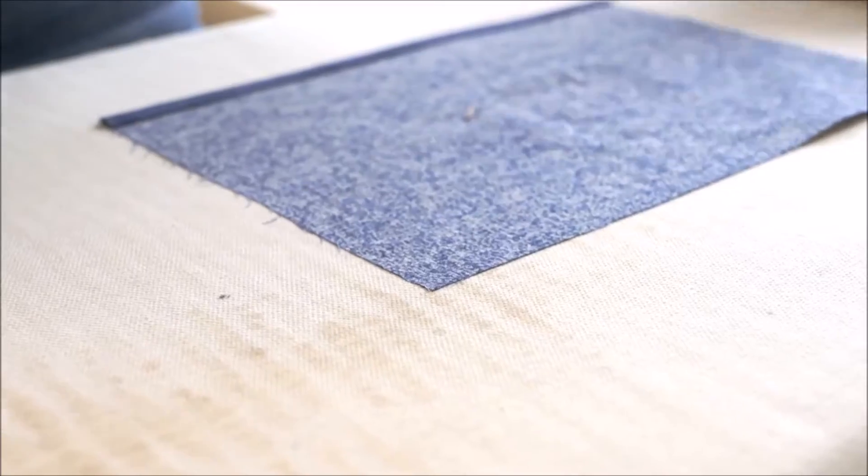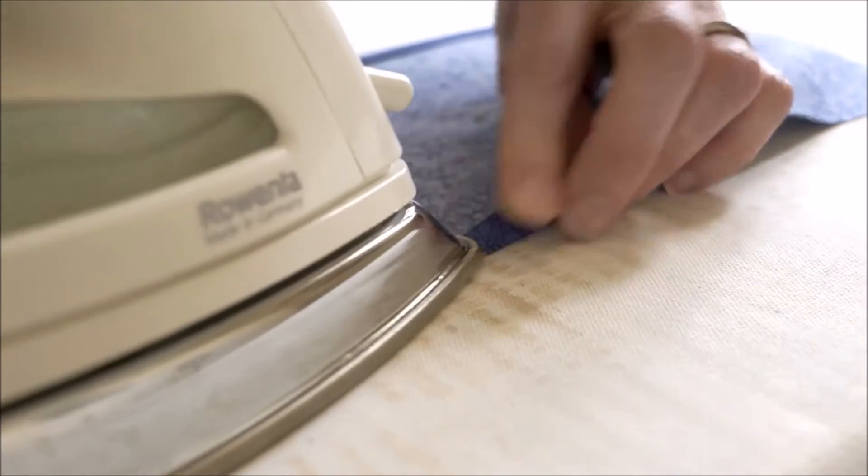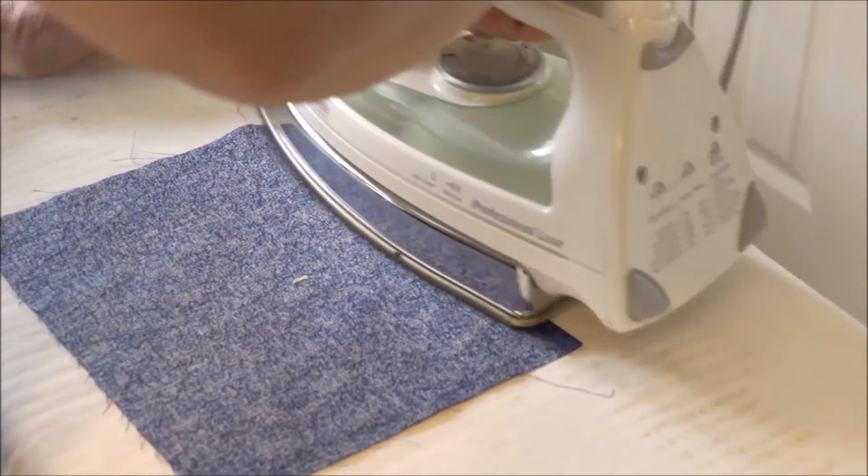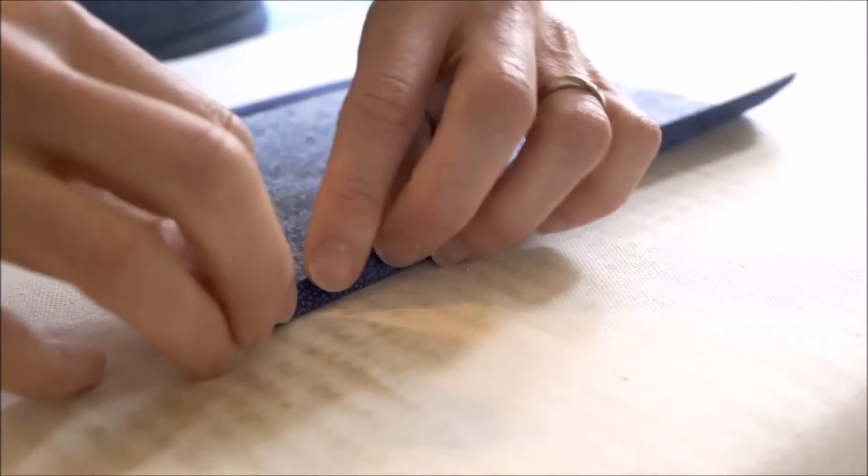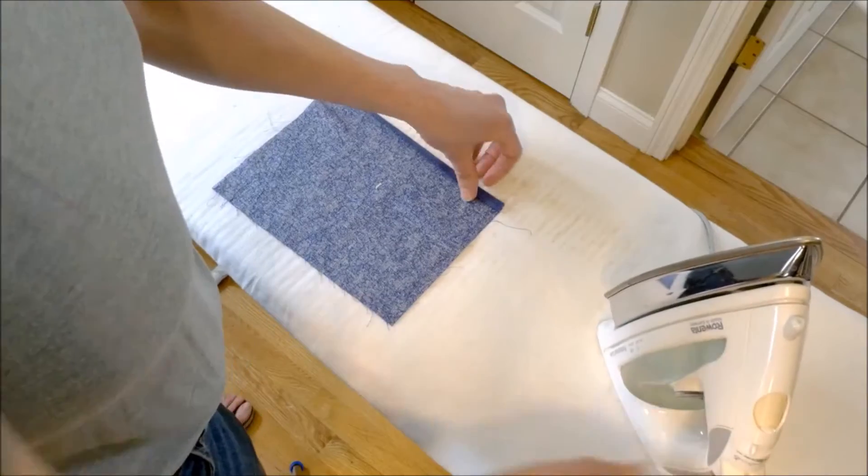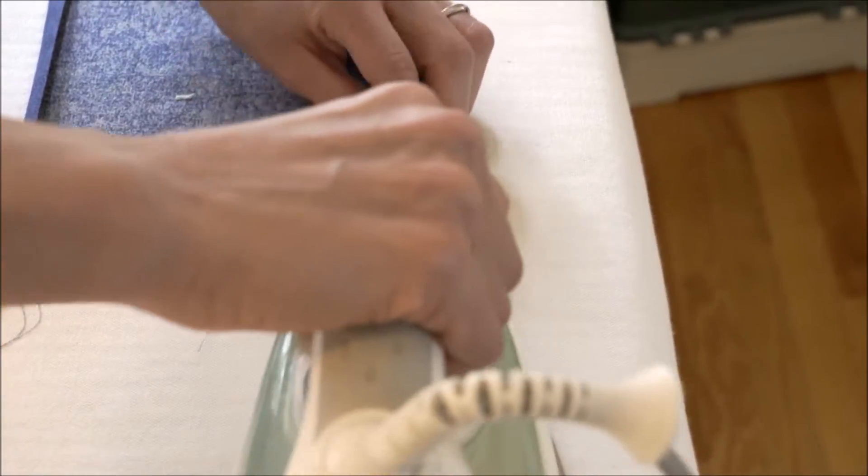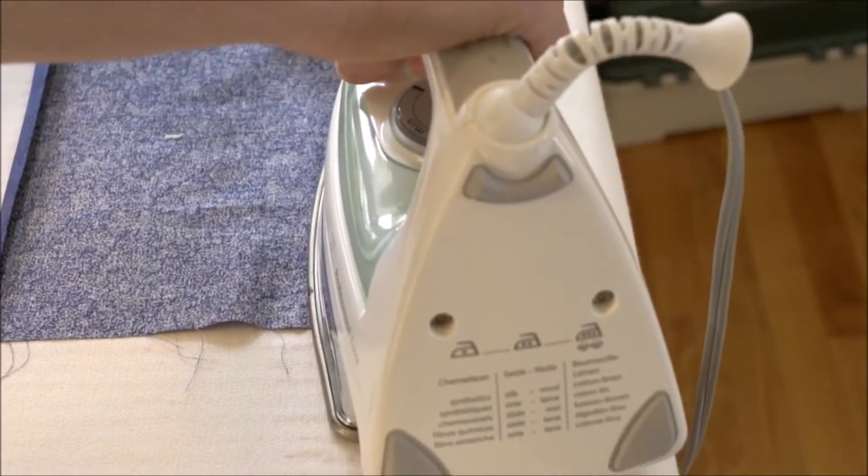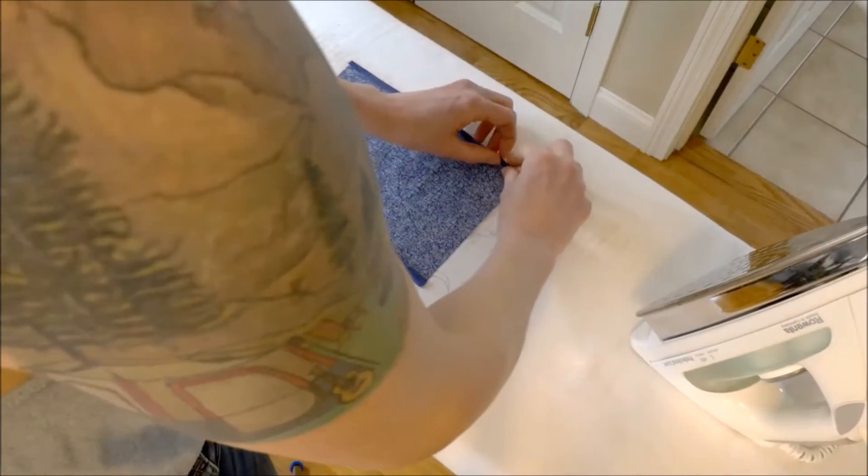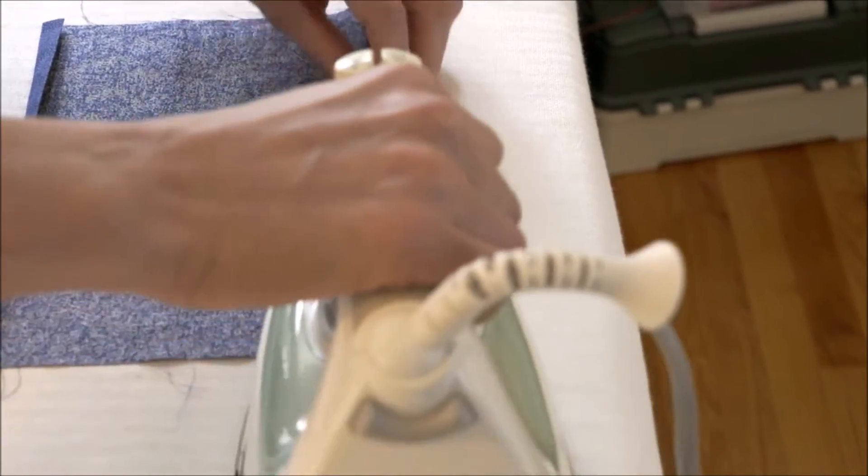Our first step is to iron the finished seams on the top and bottom edges of the fabric. I'm folding it over and ironing a quarter inch, then folding it over and ironing again. We'll do the same on the bottom. Then we have a nice iron finished seam on both sides. We'll sew those in a minute.